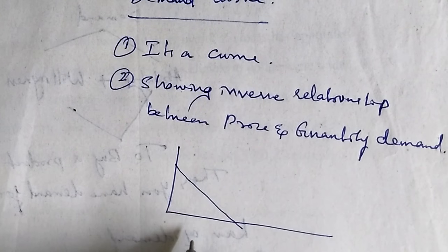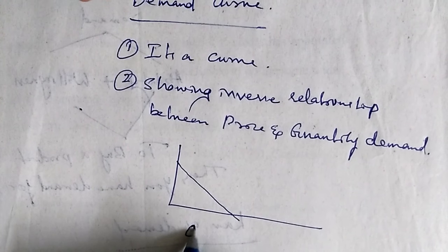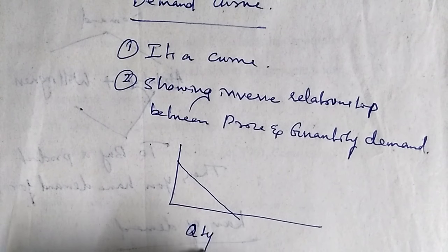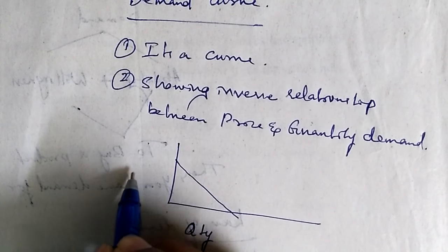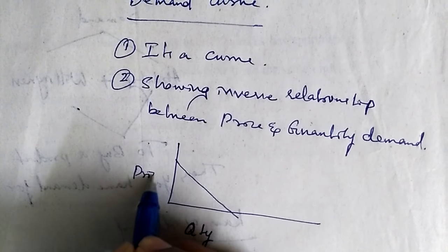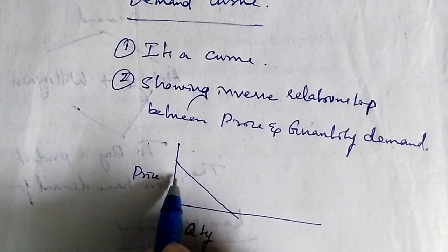It's a curve where in the x-axis we represent quantity, in the y-axis we represent price. It shows inverse relationship.